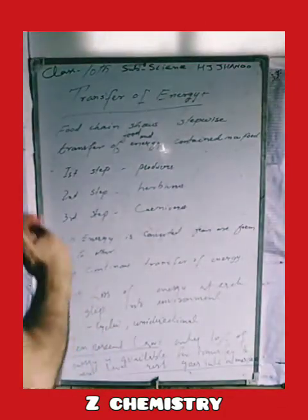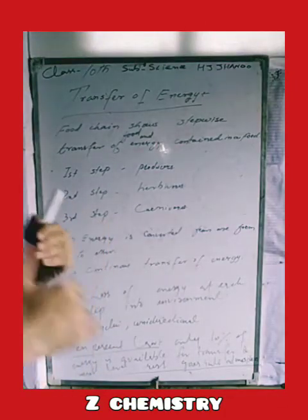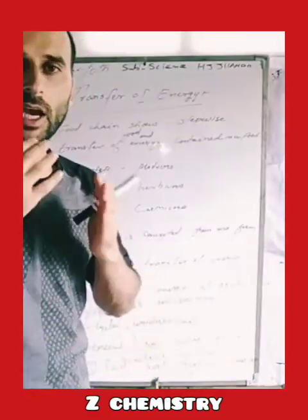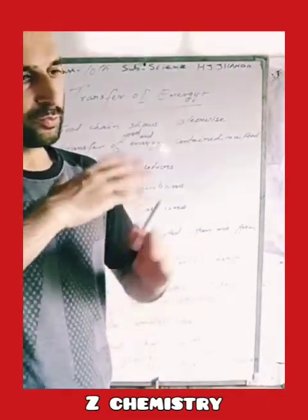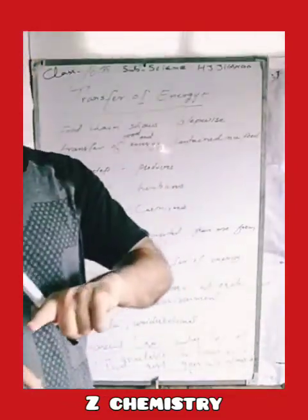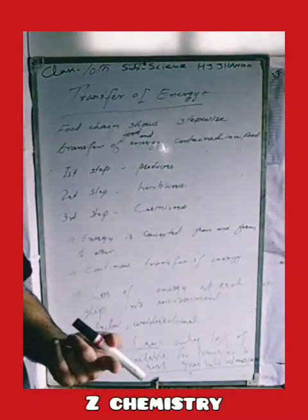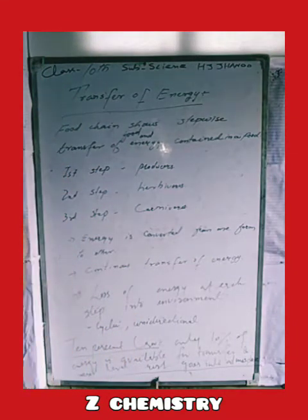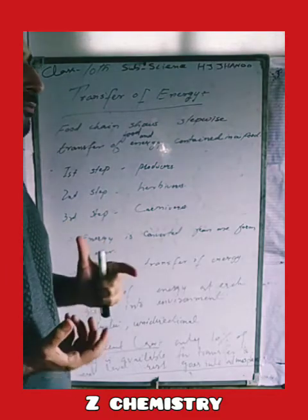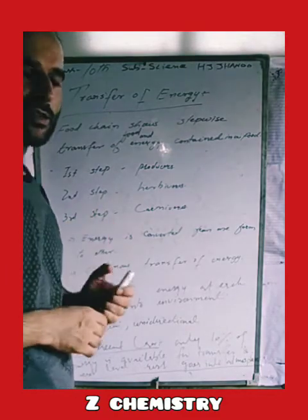When food and energy are transferred from one trophic level to another, what happens to this energy? Is the whole energy transferred from one level to another, or does some dissipate into the atmosphere? A food chain shows the step-wise transfer of energy and food content.